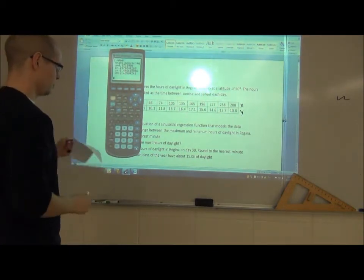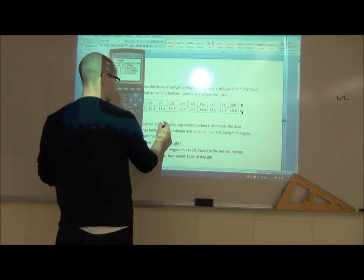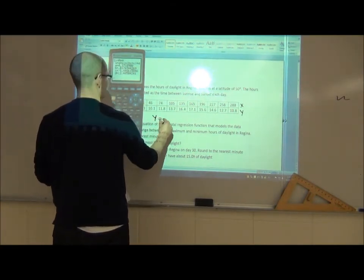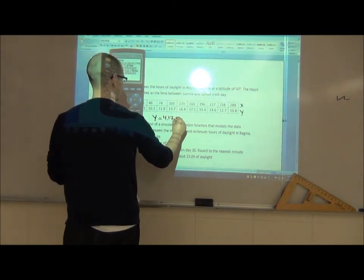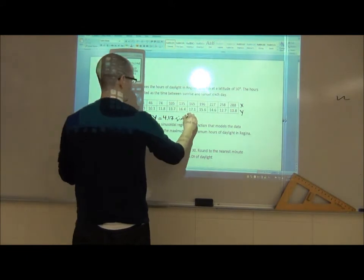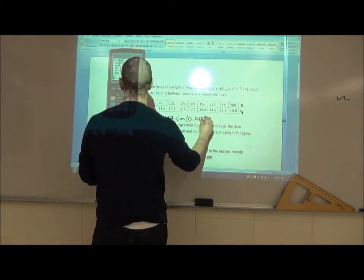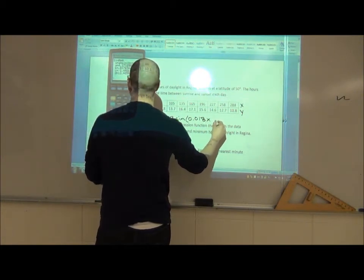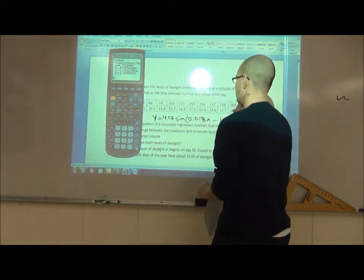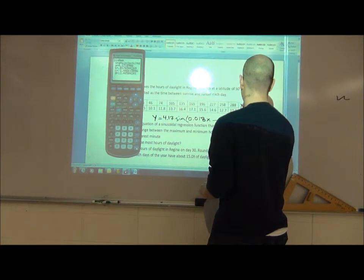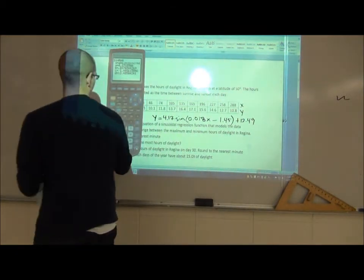The calculator will take that and it'll put it as best it can into a formula. So the formula for part A, and this is rounding off to the nearest hundredth, is y equals 4.17 sin, this is my a value, my b value is 0.01718 rounded up, x, my c value is minus 1.45.